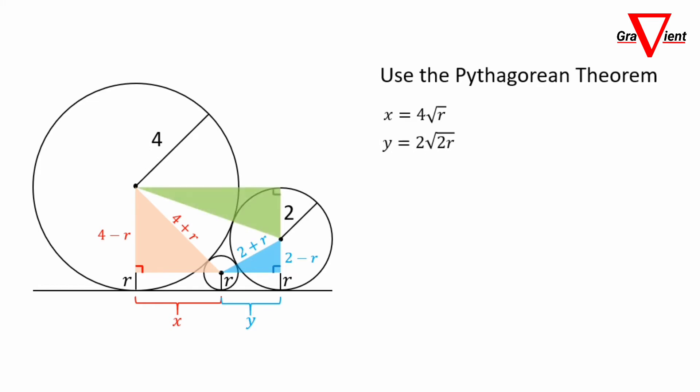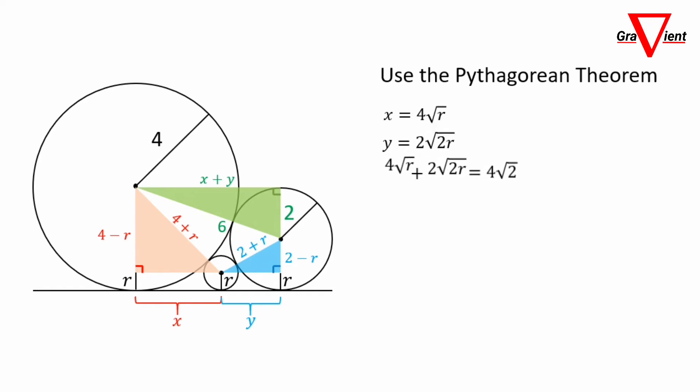Do it one more time with the two larger circles. The base side of the right triangle is X plus Y, the hypotenuse is 4 plus 2 equals 6, and the other side is 4 minus 2 equals 2. With the Pythagorean theorem, (X plus Y) squared equals 6 squared minus 2 squared. Taking the square root of both sides, we get X plus Y equals 4 times the square root of 2.